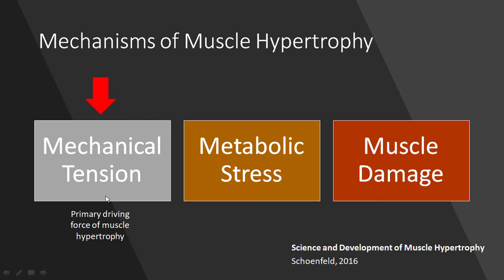The three mechanisms are mechanical tension, metabolic stress, and muscle damage. It's very well established that mechanical tension is by far the primary driving force of muscle hypertrophy. The other two mechanisms are not as well understood, and it's not 100% confirmed whether they actually contribute to hypertrophy, but they are theorized and we'll get into that. We're going to start with mechanical tension — the most important mechanism.